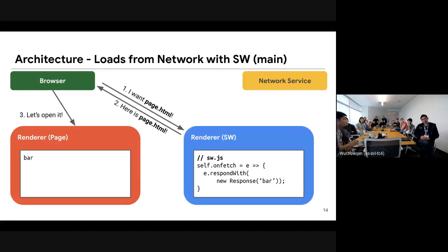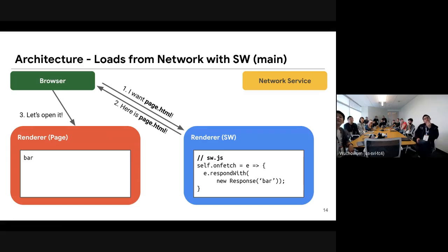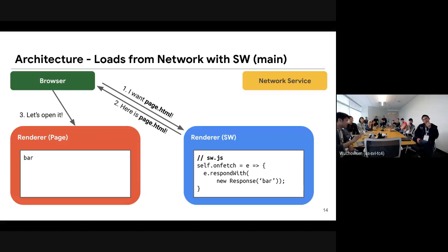If you have a service worker, the request is routed to the service worker first. If the service worker has a response 'bar', the browser gets that response, commits it to the renderer for the page, and the renderer shows 'bar'.